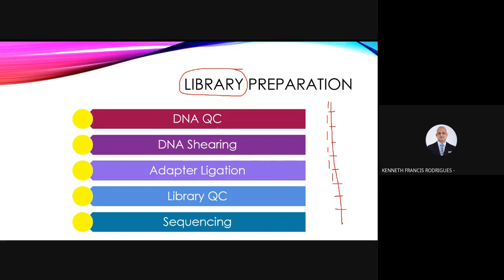Based on the platform used, library preparation procedures will differ. If you use a long-read platform such as PacBio, you prepare the genome for long reads — generally shearing to around 10,000 to 20,000 bases. If you use Illumina paired-end reads, the fragment size is generally smaller. Whichever library preparation procedure you use, you must refer to the manufacturer's manual as the steps are different.